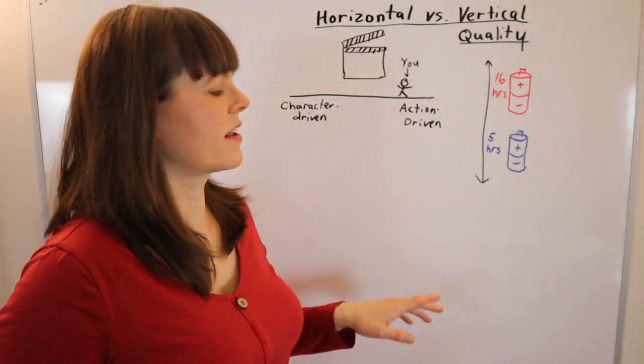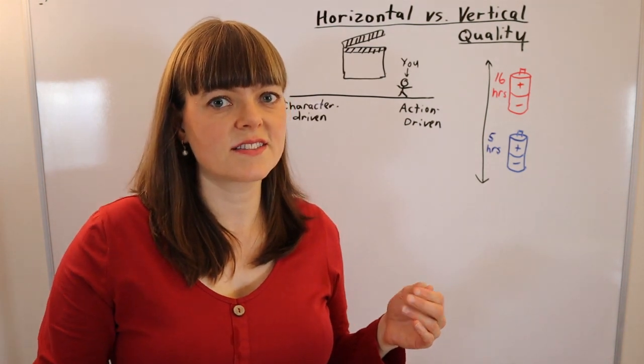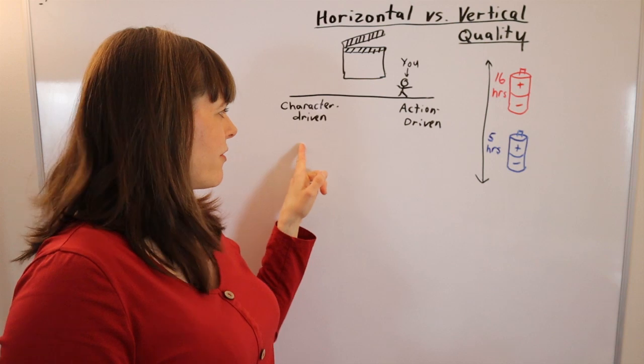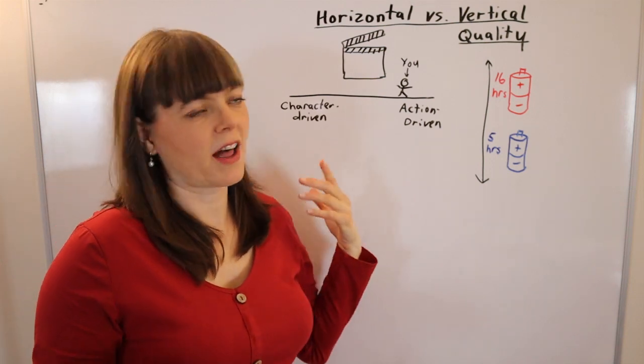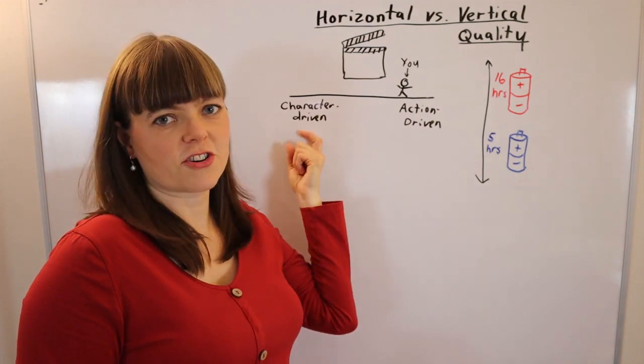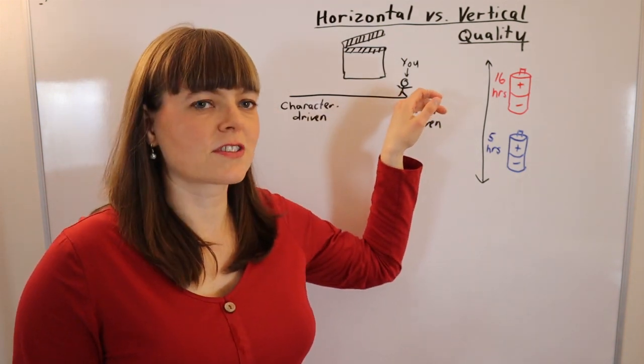Horizontal quality, on the other hand, is about how well matched the product is to your preferences. If you line movies up along this one-dimensional axis where you have action-driven movies over here and character-driven movies over here, you have an optimal preference for movies.